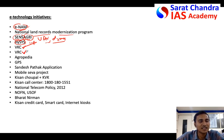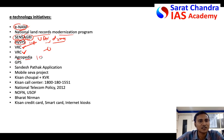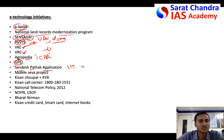Village Knowledge Centers (VKC) are kiosks in villages where any farmer can get information on the latest technology, weather forecasts, soil testing labs, or fertilizers. Village Resource Centers (VRC), an ISRO initiative, link villages with agriculture universities and skill development centers. Agropedia, started by ICAR, helps farmers. GPS can be used by farmers with large lands. The Sandesh Pathak application, developed by IITs and CDAC, reads SMS aloud for illiterate farmers.